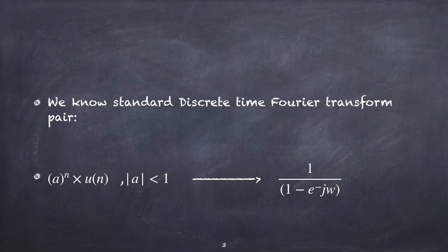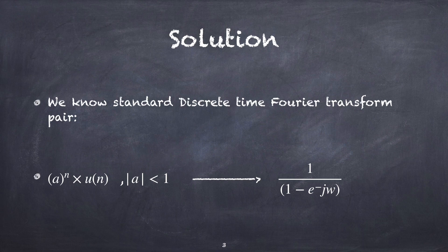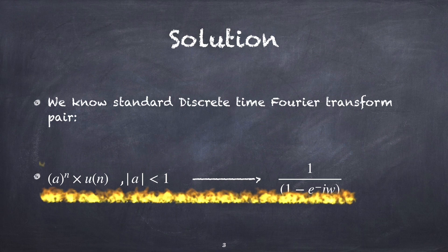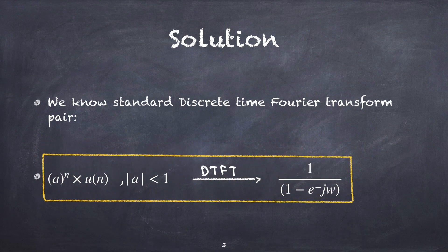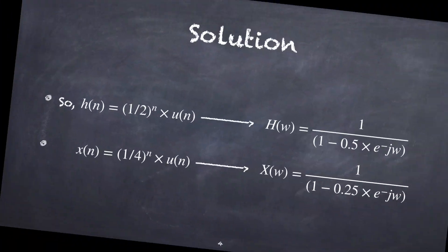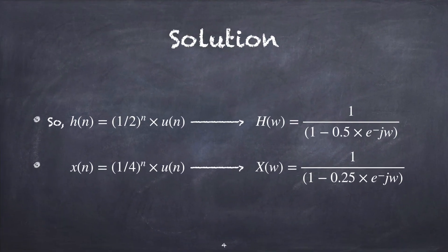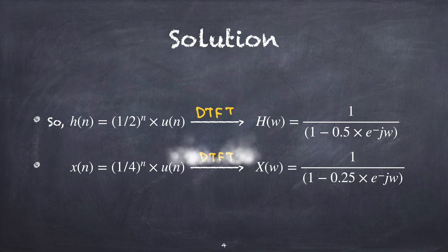Now let's start solving this example. Before solving, we have to know one of the standard discrete-time Fourier transform pairs: a^n · u(n), where |a| < 1, has DTFT equal to 1 / (1 − a·e^(−jω)). From this standard DTFT pair, we can write the DTFT of h(n) and x(n) as shown.